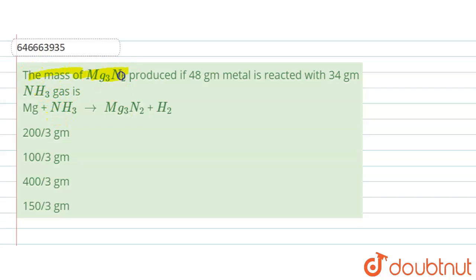So here the question is: the mass of Mg3N2 produced if 48 gram metal is reacted with 34 gram ammonia gas.